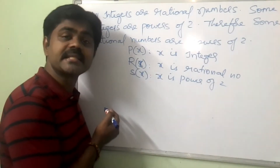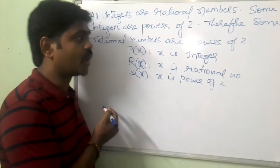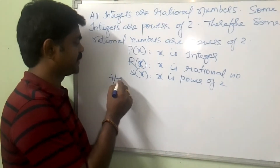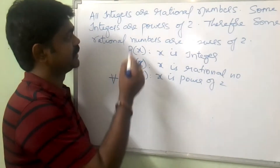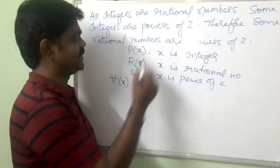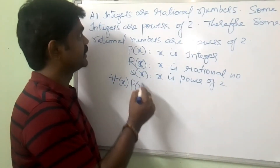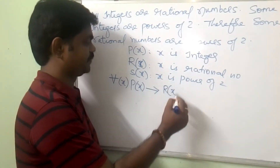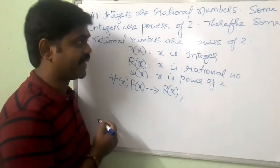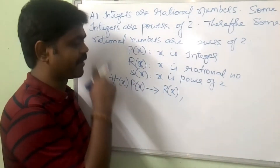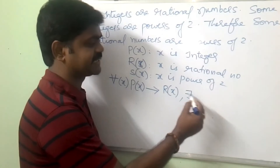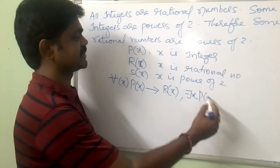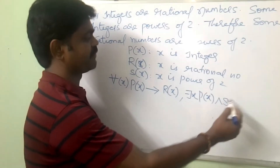First we said that all integers are rational numbers. All integers means for all X: P of X implies R of X. This is one premise. Some integers are powers of 2, so some means there exists X: P of X and S of X.